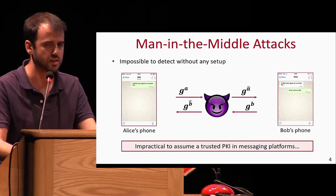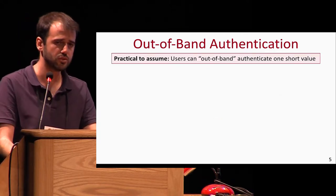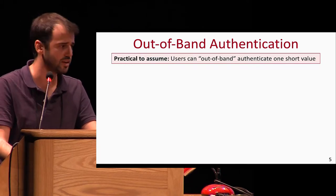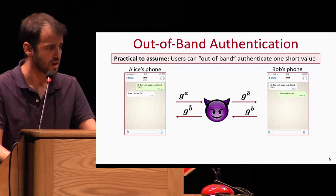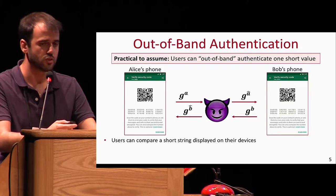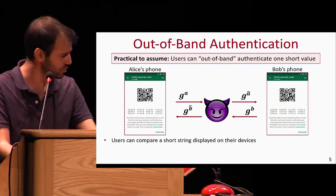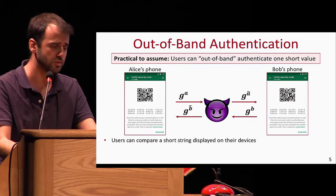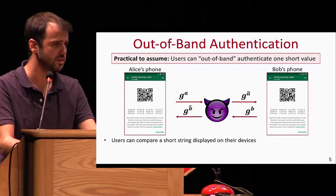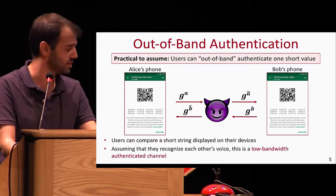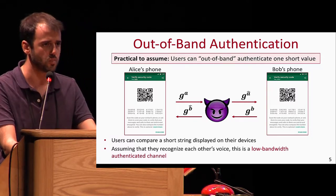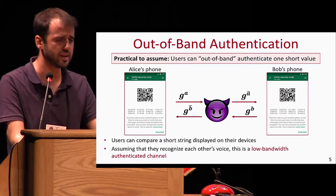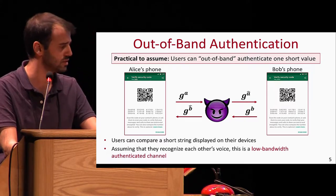Users have multiple devices, replace them, update contacts, et cetera. Fortunately, what is practical to assume — and what is indeed assumed by most messaging applications today — is that users have the ability to out-of-band authenticate one short value. After completing the Diffie-Hellman execution, the users can compare one short value displayed on both their devices. For example, Alice can record a voice message of herself reading the value out loud, send it to Bob, and Bob can verify it is consistent with what he sees on his device. Assuming Bob recognizes Alice's voice, this forms a low-bandwidth authenticated channel from Alice to Bob.